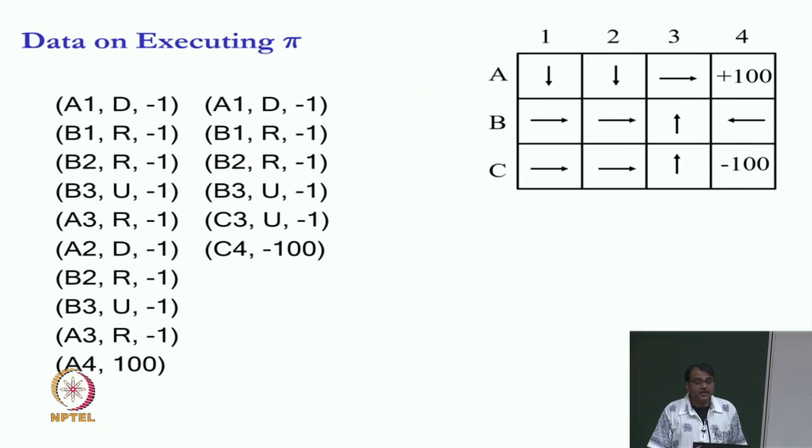And then in one case, we went A1, B1, B2, B3, which is here. And then we tried to go up, but we went to A3 when we tried to go right, we went to A2 for some reason. Then we went down, then we went to B2, then we went B3 and then we went up again and then we went to this 100. So this is one of the trajectories that we are given. A different trajectory, when we tried to go B3 up, we go to C3 and then we try to go to C3 up, we go to C4, right. So this is the different trajectory that is given to us. We do not know the probability distribution.